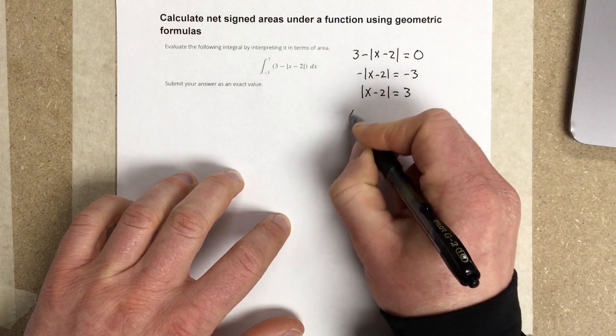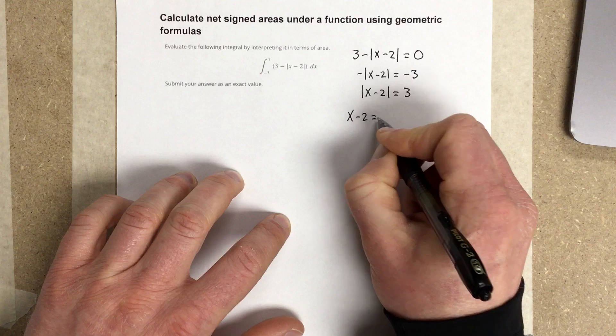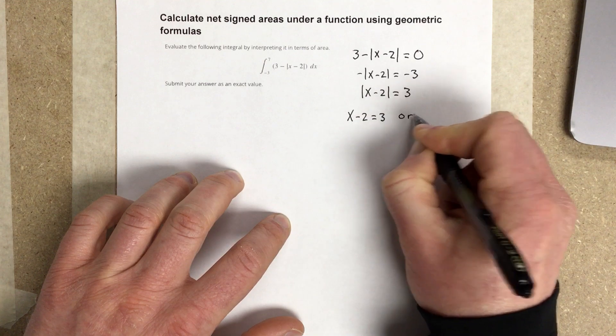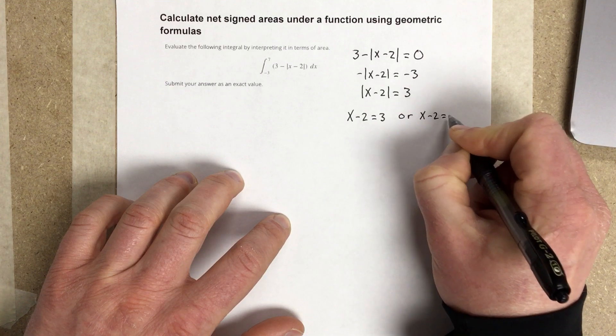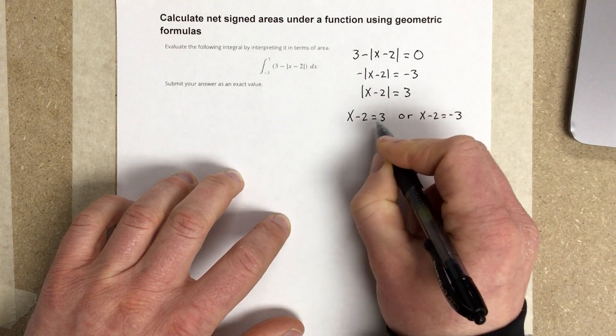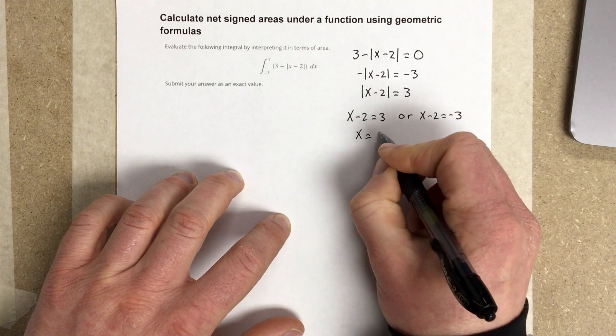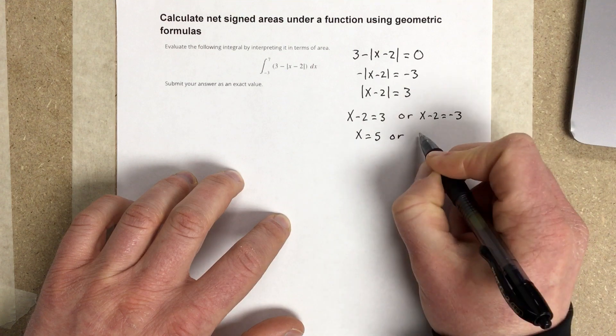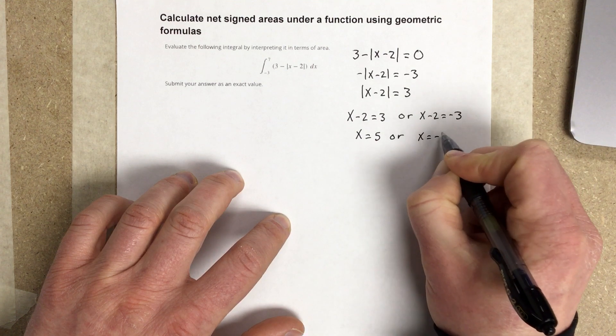I evaluate this, that would be x minus 2 is equal to 3, or x minus 2 is equal to negative 3. So I'm evaluating the absolute value. So I add 2, I get x is equal to 5. Or, add the 2 here, I get x is equal to negative 1.